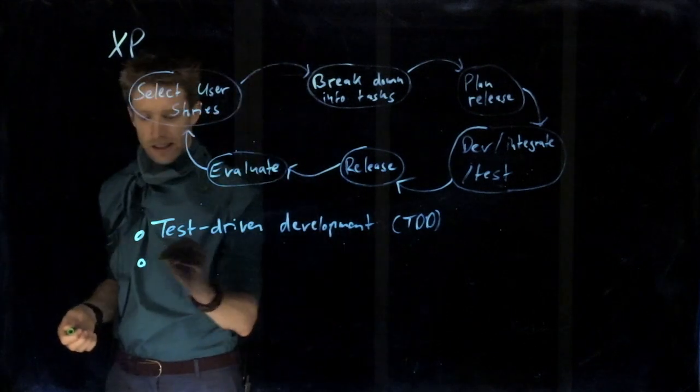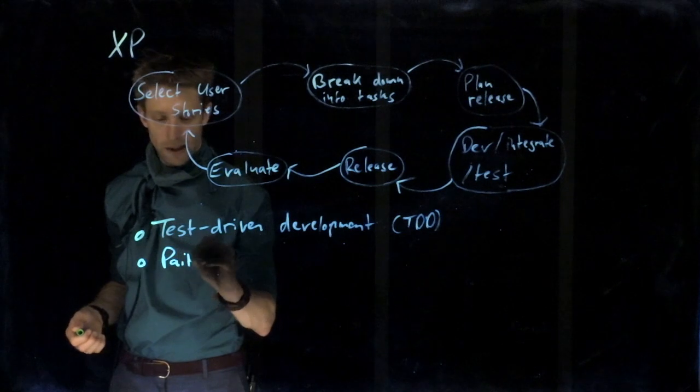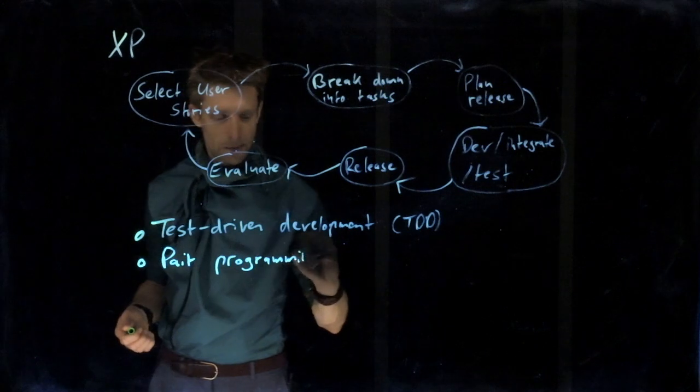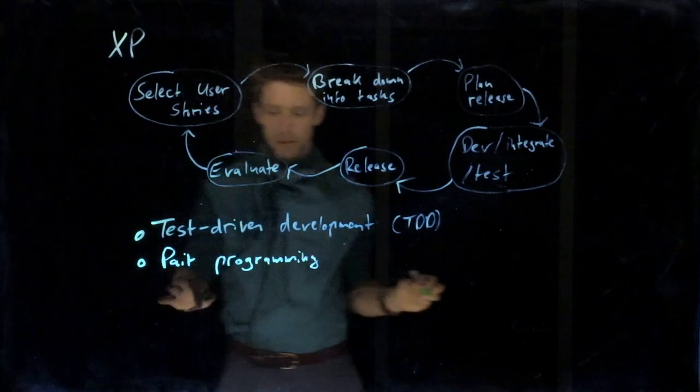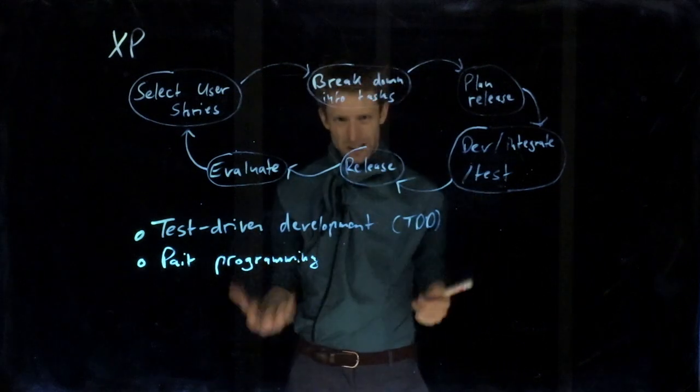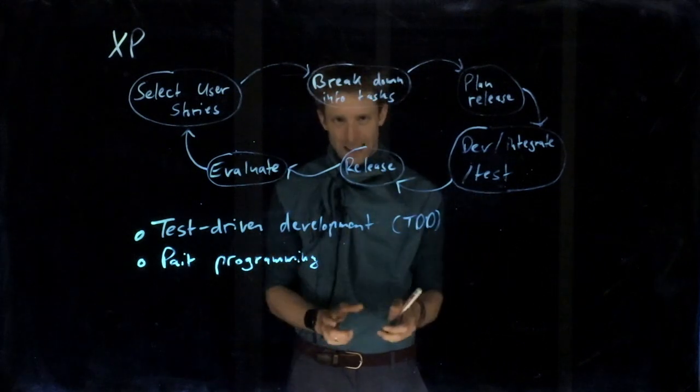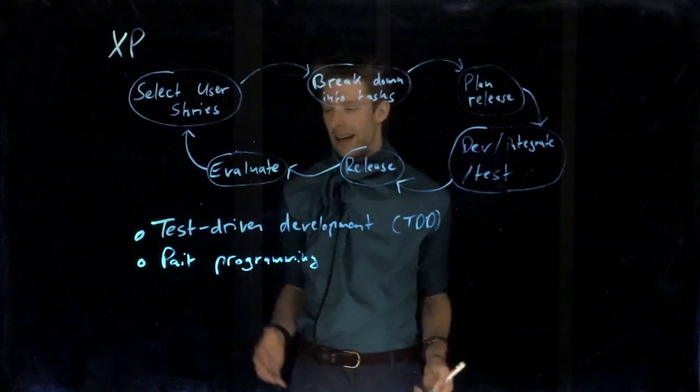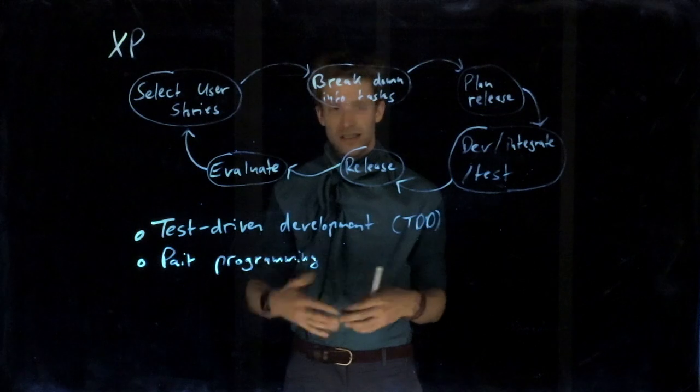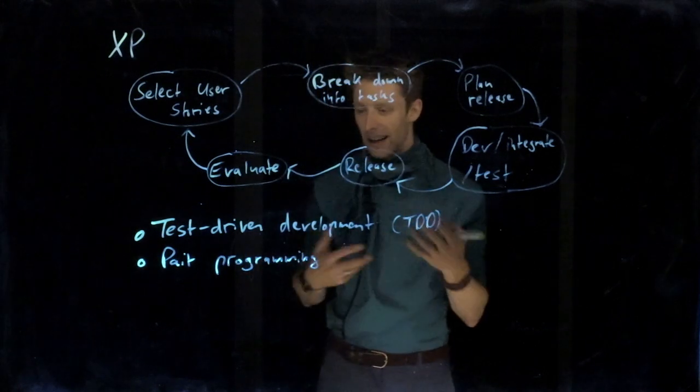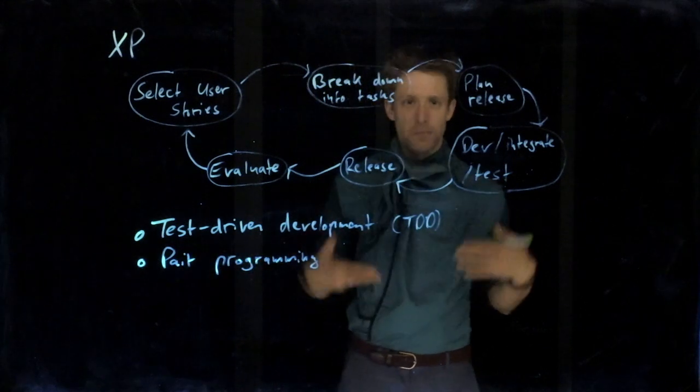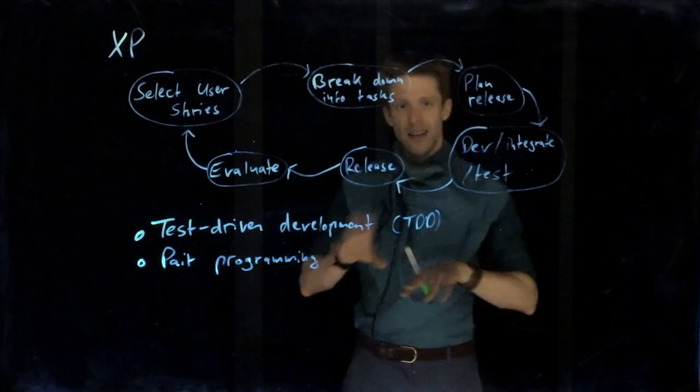The next practice is called pair programming. In pair programming, as the name suggests, you pair up two people and you're programming together with one computer, with one keyboard, with one screen. And there is always one person that is writing and the other person is asking questions or commenting. So kind of discussing what is going on. And the person that is programming is kind of explaining what he or she is thinking, where it's going.